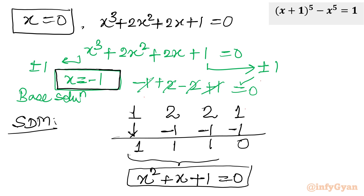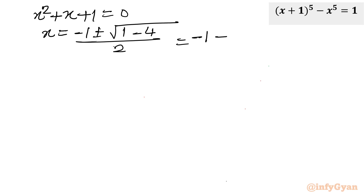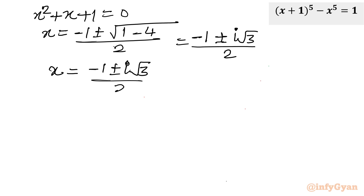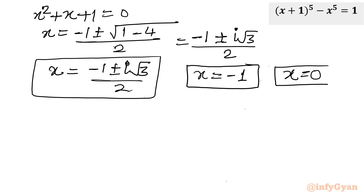One real root confirmed is x = −1. Solving x² + x + 1 = 0 using the quadratic formula: x = (−b ± √(b²−4ac)) / 2a = (−1 ± √(−3)) / 2 = (−1 ± i√3) / 2. These are the cube roots of unity, omega and omega squared — two complex solutions. So we have two real solutions (x = 0, x = −1) and two imaginary solutions.